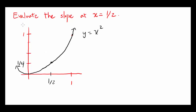Let's continue our discussion of evaluating the slope of the graph y equals x squared at x equals 1 half. Now how can we think about doing this?